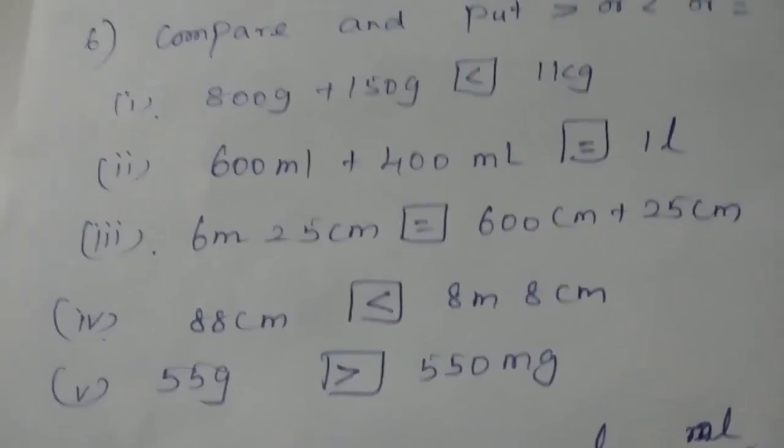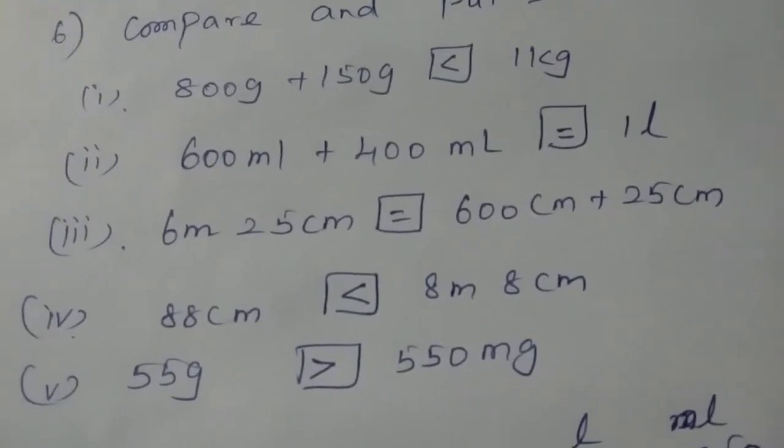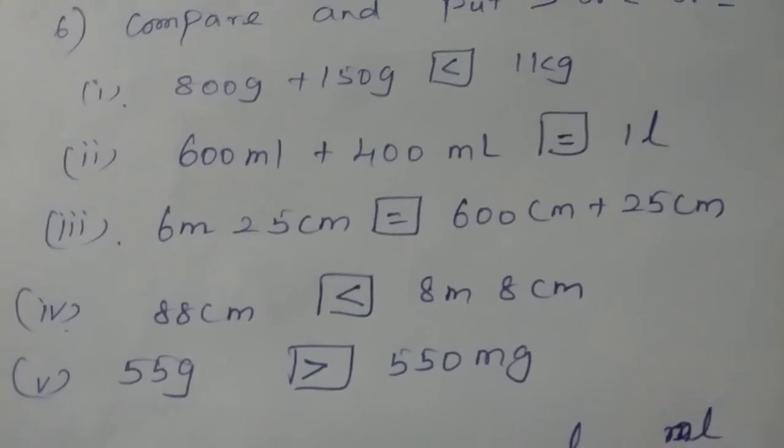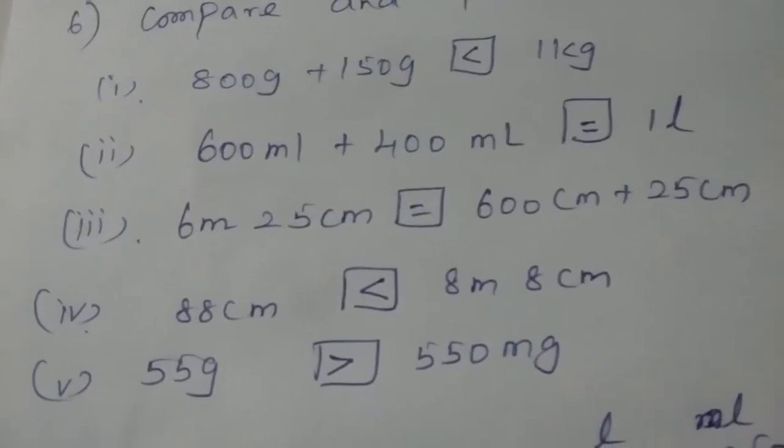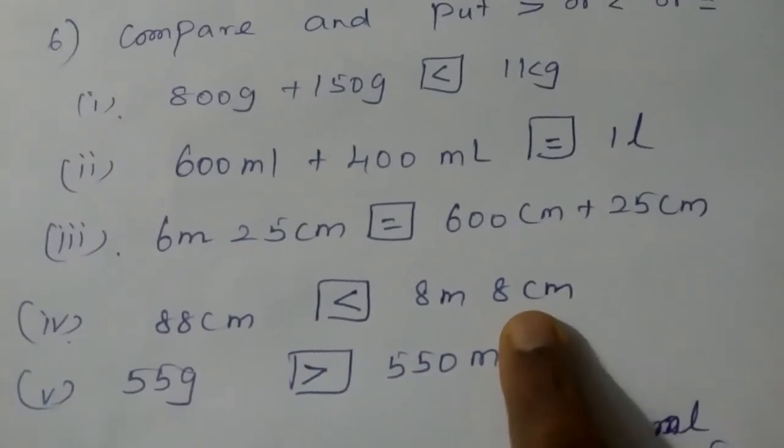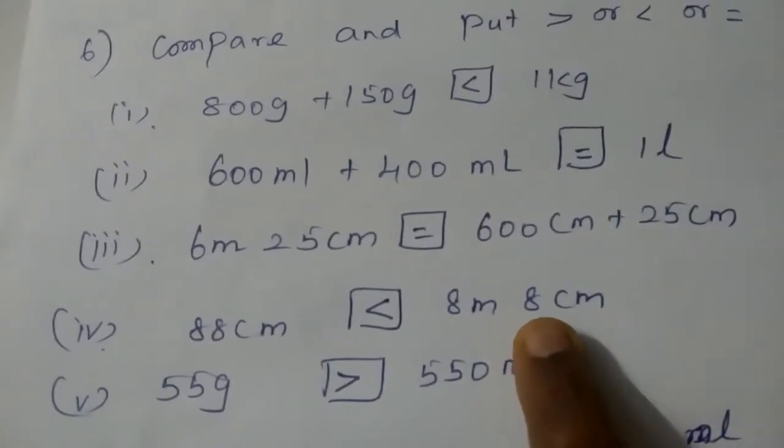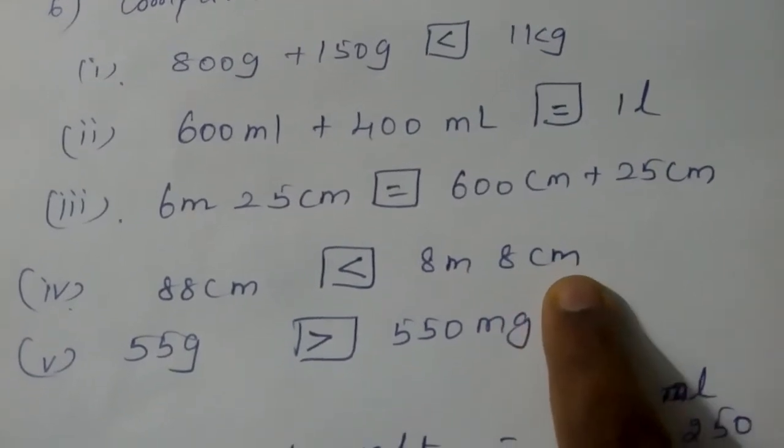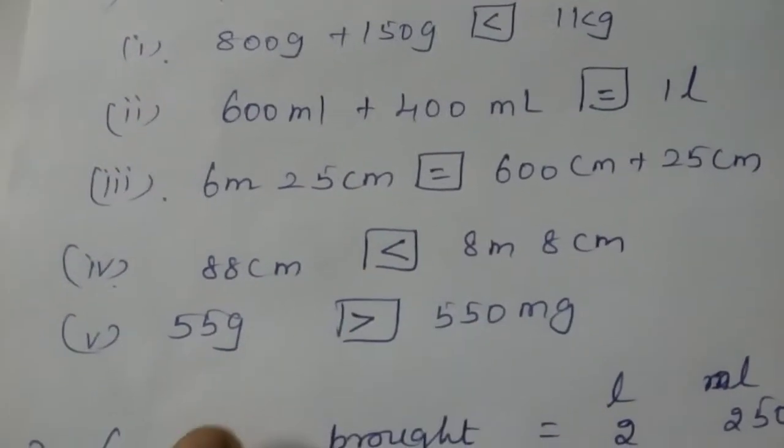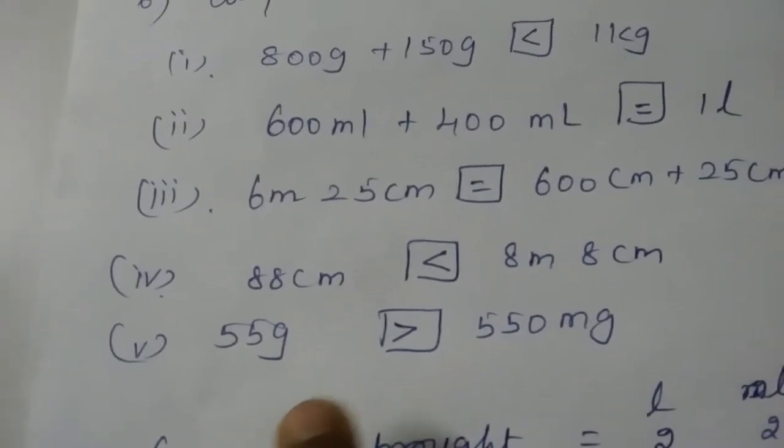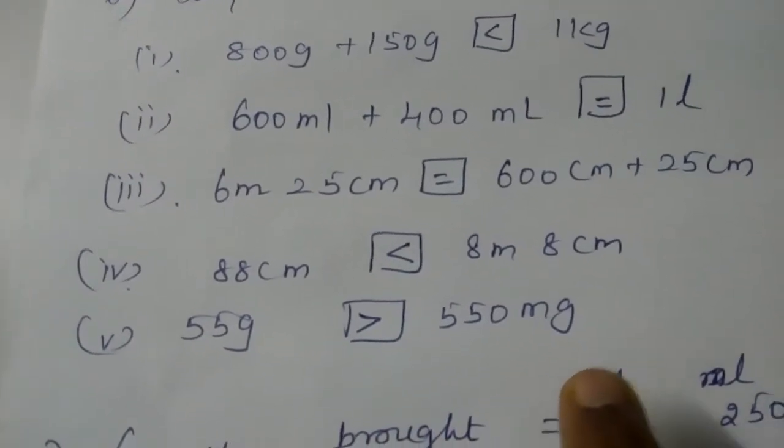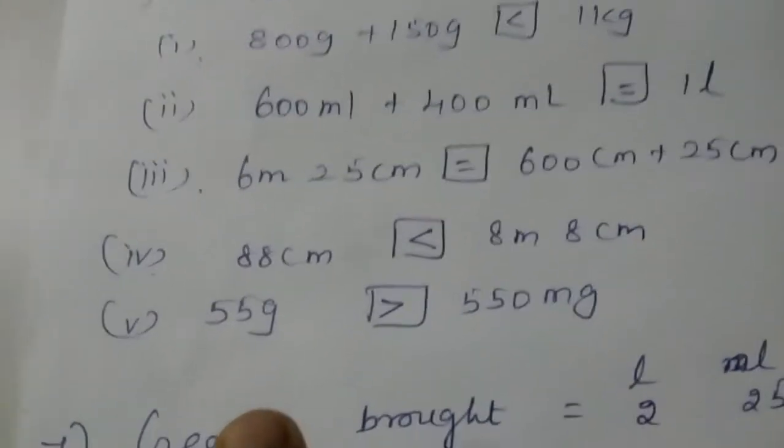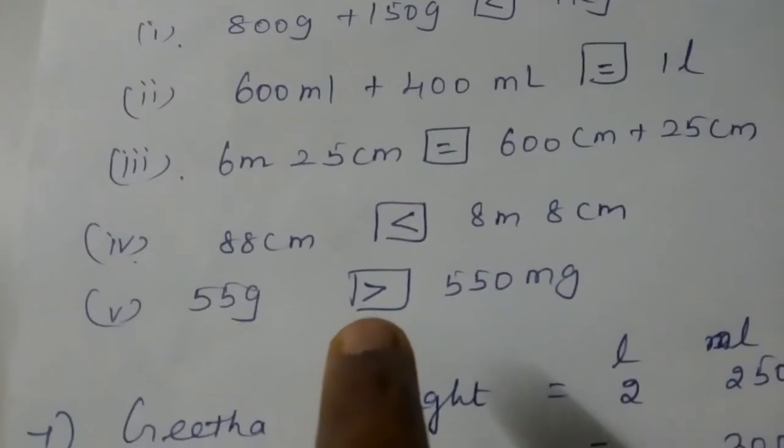The fourth question is 88 centimeter and in your right hand side is given 8 meter and 8 centimeter. That means 1 meter equals 100 centimeter. So 8 times 100 is 800, 800 plus 8 is 808 which is more than this. The fifth question is 55 grams and 550 milligrams. Which is bigger one here? The gram part is bigger than the milligram, so we have to write the symbol like this.